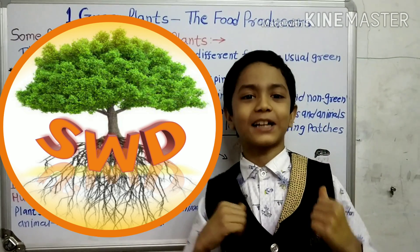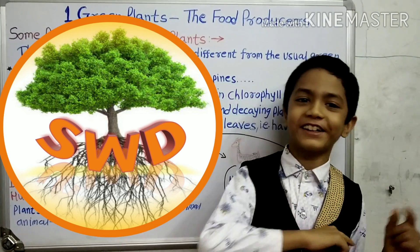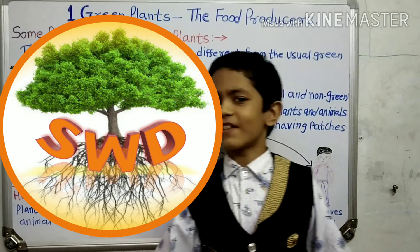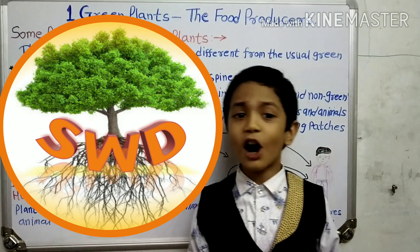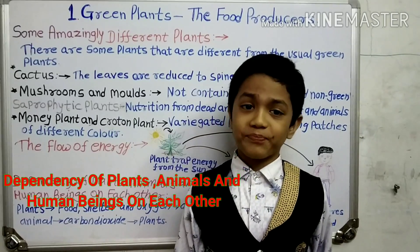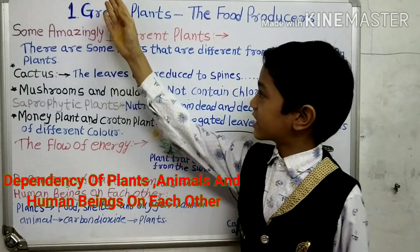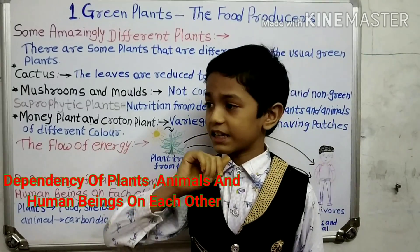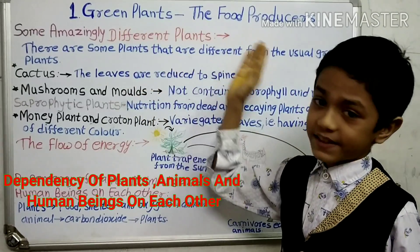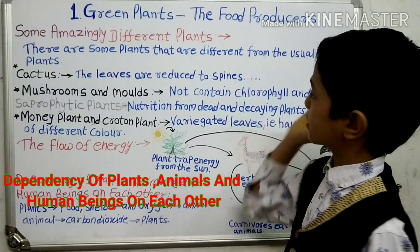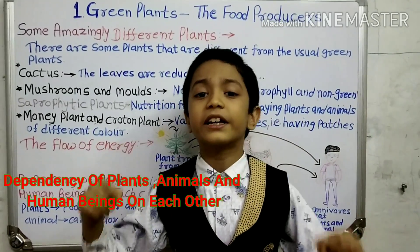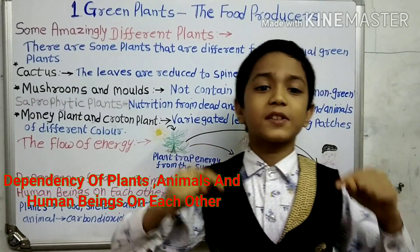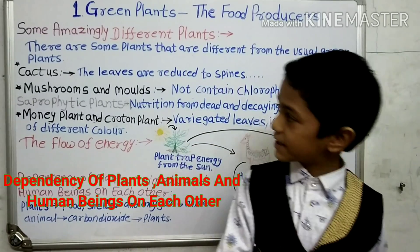Hello friends, welcome to my channel 'Study with Dhan and Jai'. In this channel there is a wonderful fourth syllabus of science. Before we start today's interesting video, I wanted to tell you that the first part and second part of 'The Green Plant: The Food Producer' have been uploaded — the link is in the description box below. So let us begin.